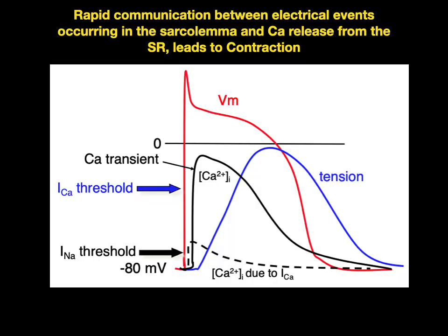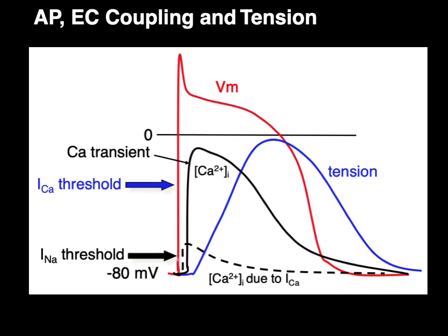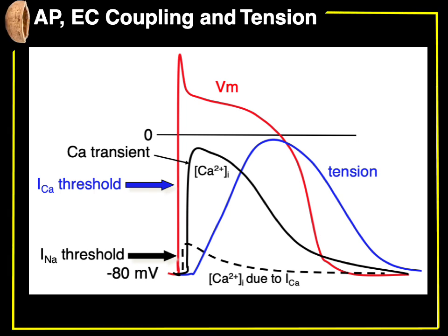Rapid communication between electrical events occurring in the sarcolemma and calcium release from the SR leads to contraction. And that, my friends, is action potential, excitation, contraction coupling, and tension in a nutshell.